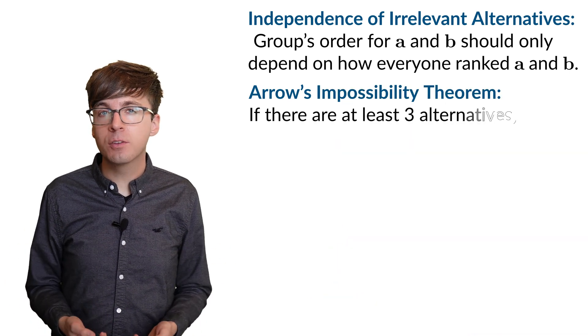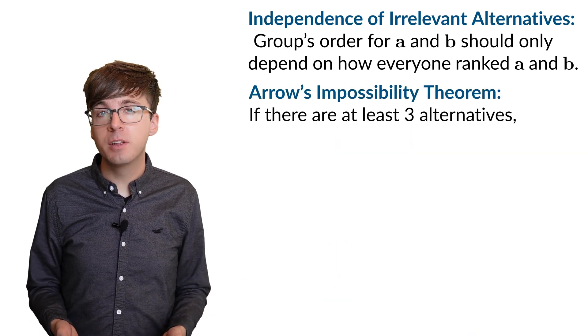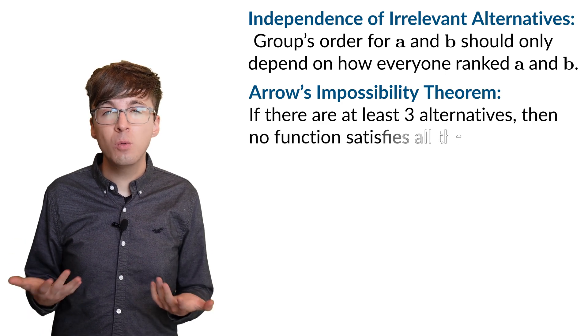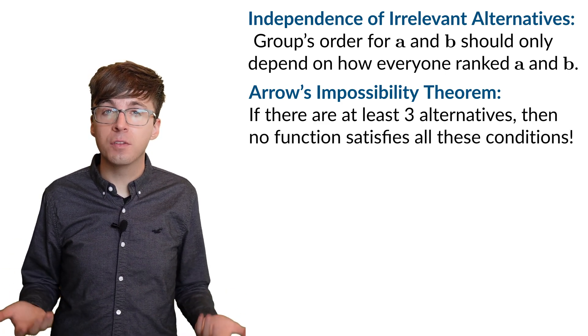If there are at least three alternatives, then Arrow's impossibility theorem tells us that there is no social welfare function that satisfies all these properties.